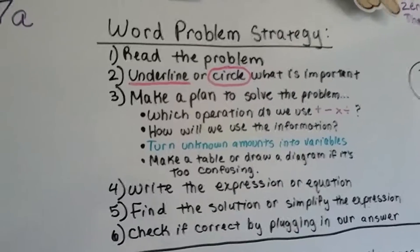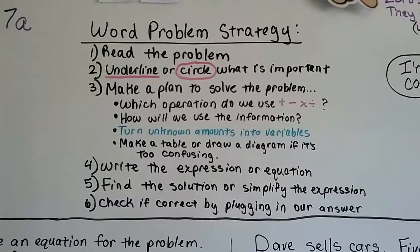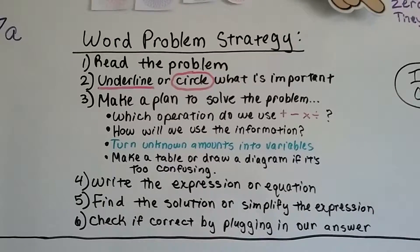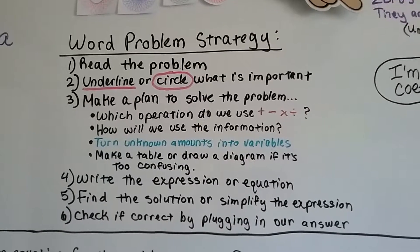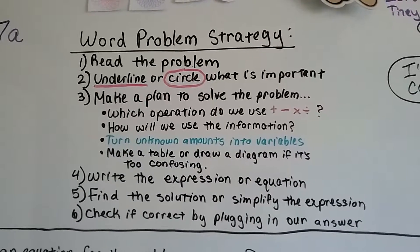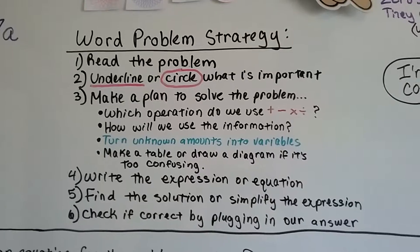If you're a regular viewer, you know that we have a word problem strategy. So, we read the problem, we underline or circle what's important if that helps us, and we make a plan to solve the problem.